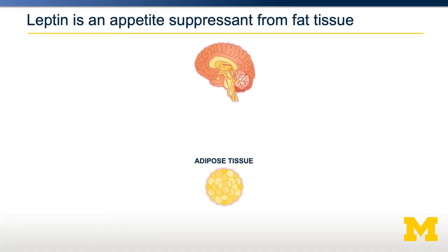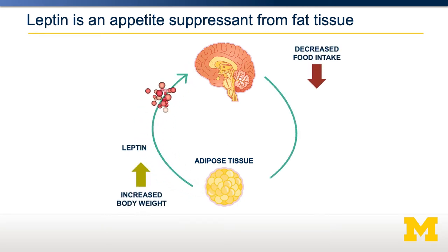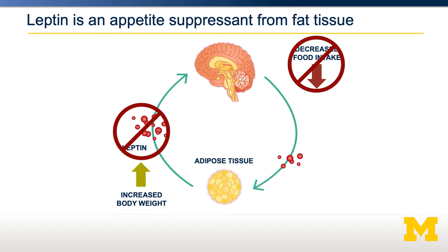Leptin, as further studies have shown, is a hormone released from adipose tissue. In most individuals, as adipose tissue expands, leptin is released and signals to the brain to decrease food intake — a normal homeostatic loop preventing further weight gain. However, in individuals who cannot make leptin, such as OB1 and OB2, as their adipose tissue expands they cannot signal to the brain to suppress appetite, so they continue to eat and their body weight keeps increasing.